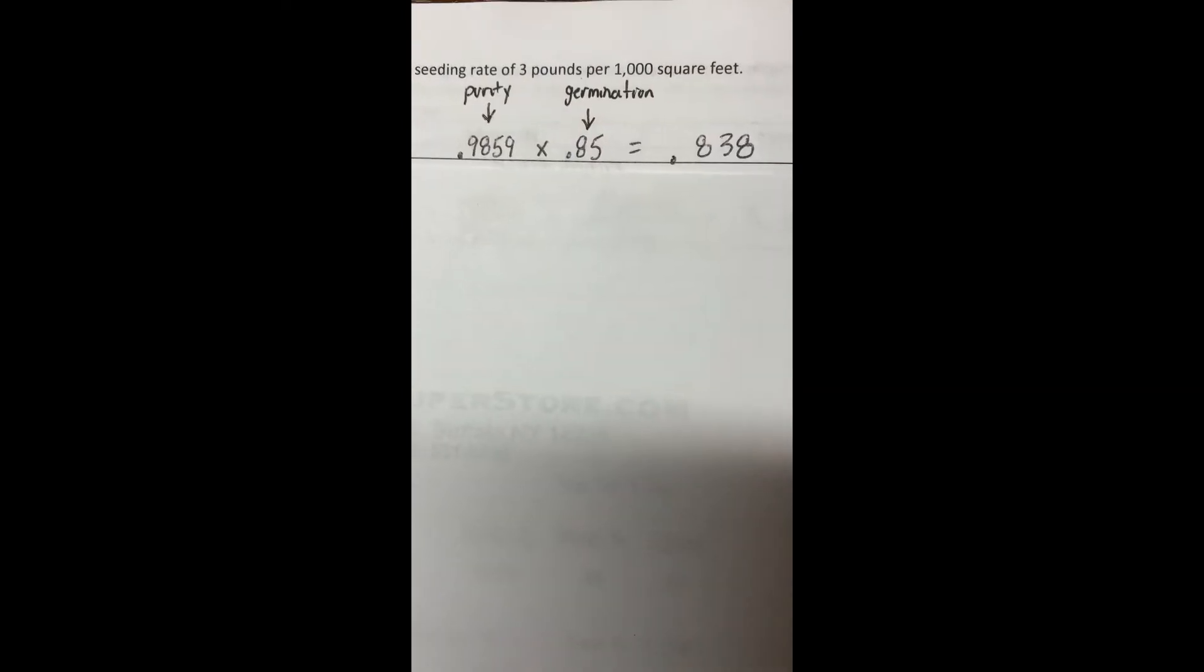So we multiply those two numbers together and we get 0.838. That means that our pure live seed or percent pure live seed is 83.8%.